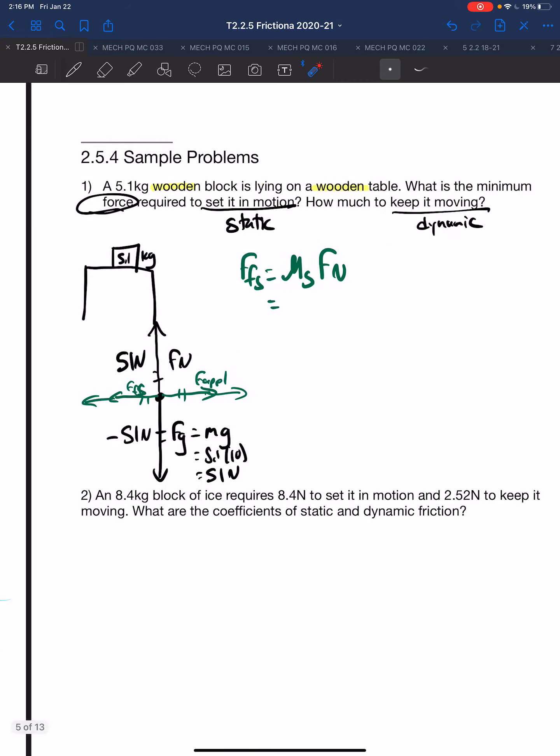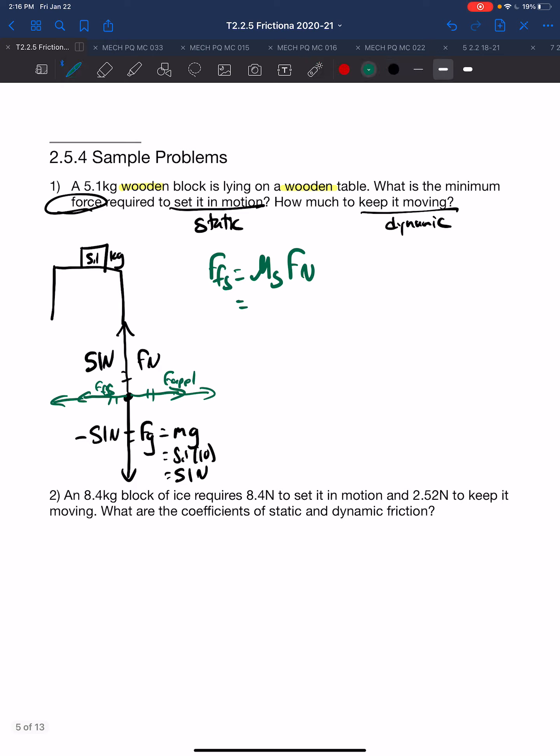So 0.5 times 51 is 26.5 newtons. Since the mass is two significant digits, we can only report two significant digits, so the force of friction static is 27 newtons.